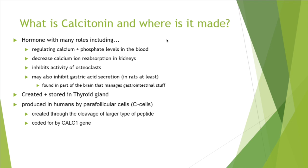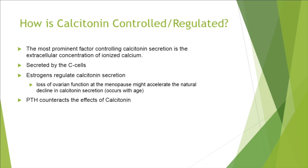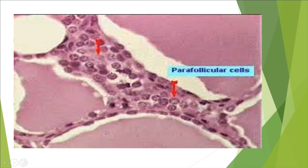Calcitonin is created and stored in the thyroid gland, which is near our throat. It's produced by cells called C cells, or parafollicular cells, that are in the thyroid gland. Here are the parafollicular cells — you can see them here. It's made through the cleavage of a more complicated peptide and coded for by many different genes, including calc-1.